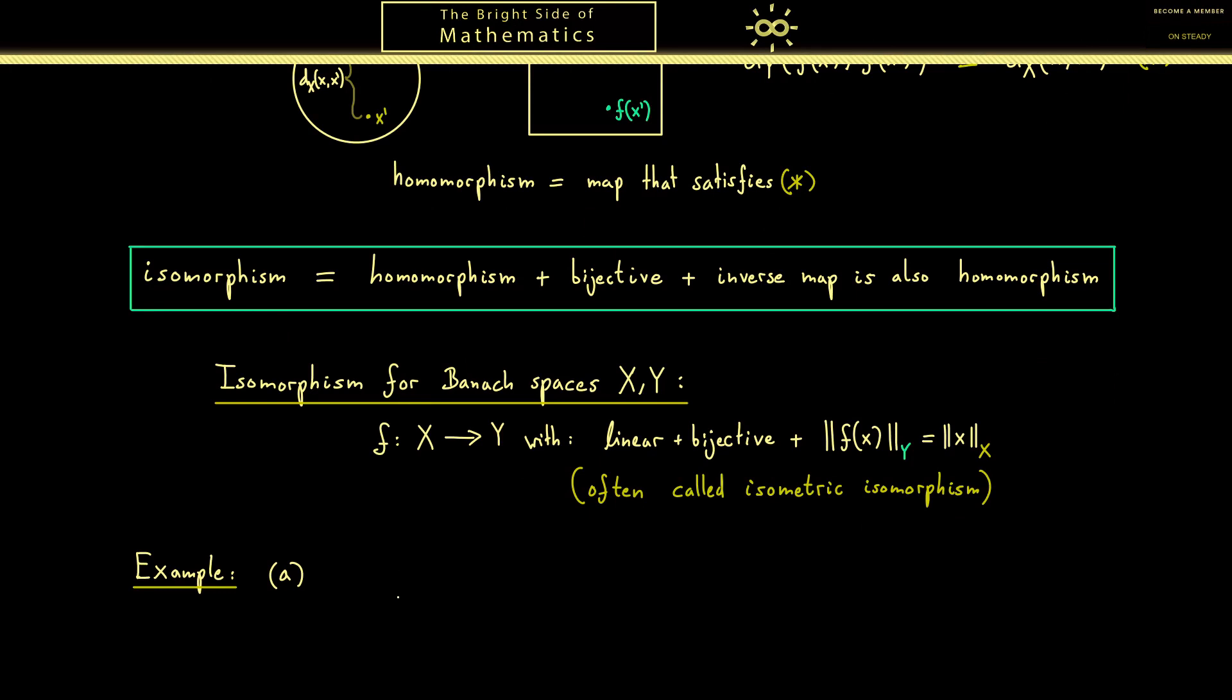The first example should be an operator defined on the LP space. I denote the operator with s index r because it's a shift operator that shifts everything to the right. More concretely it takes a sequence x1, x2 and so on and maps it to a sequence that starts with 0. And then just the rest of the numbers follow. Now obviously this is a linear operator and we can easily calculate the operator norm. By writing down the p norm of the image we immediately see it's the same as the p norm of x itself.